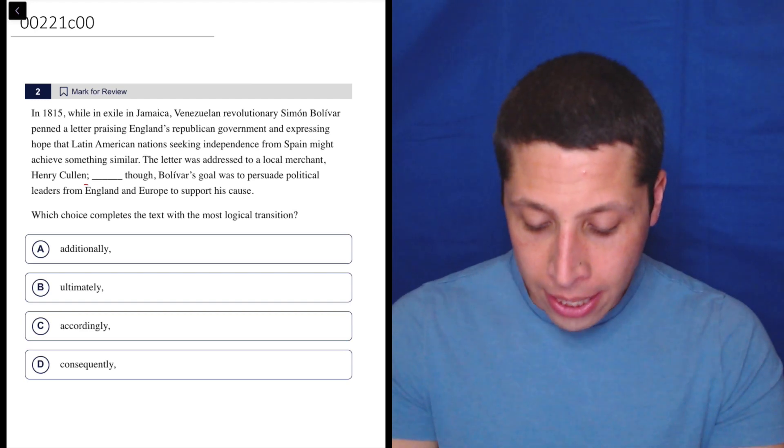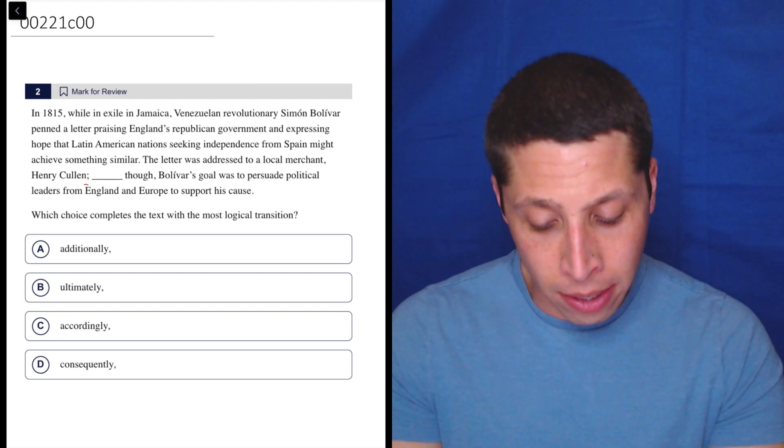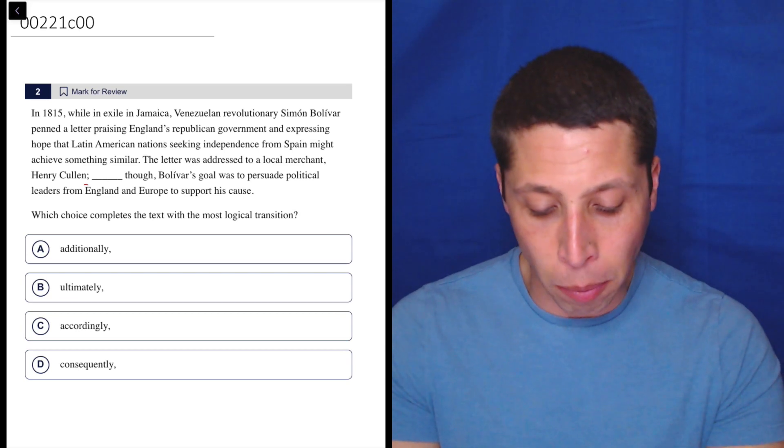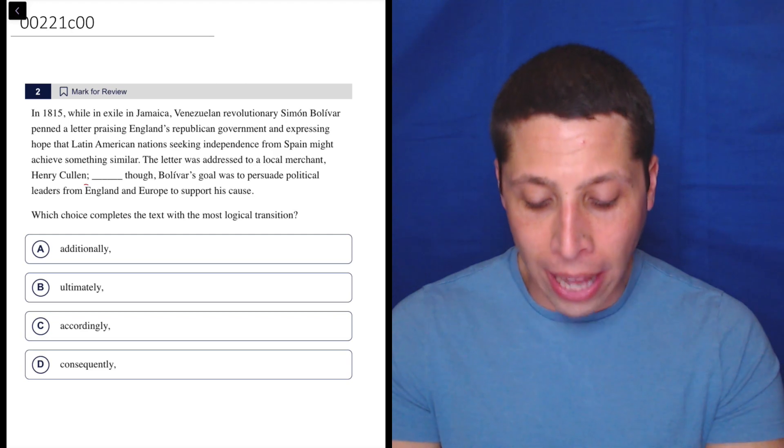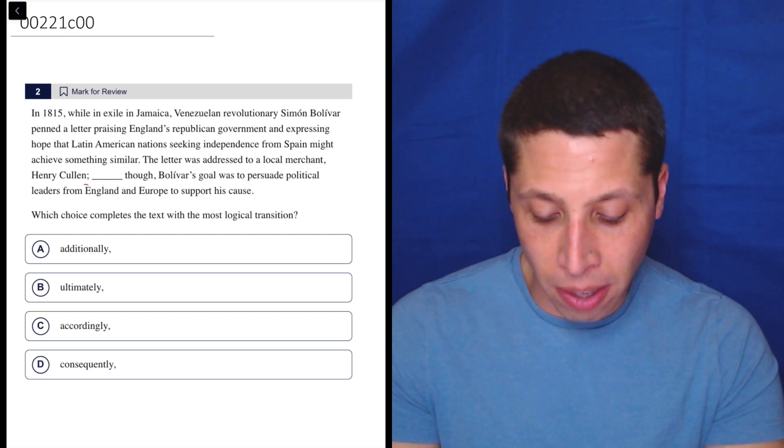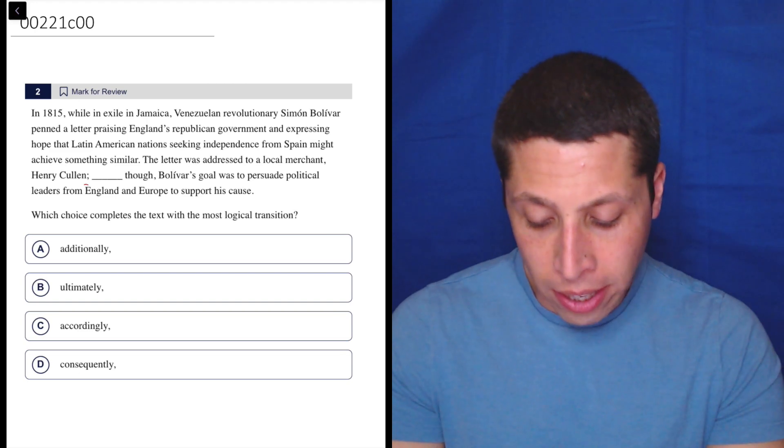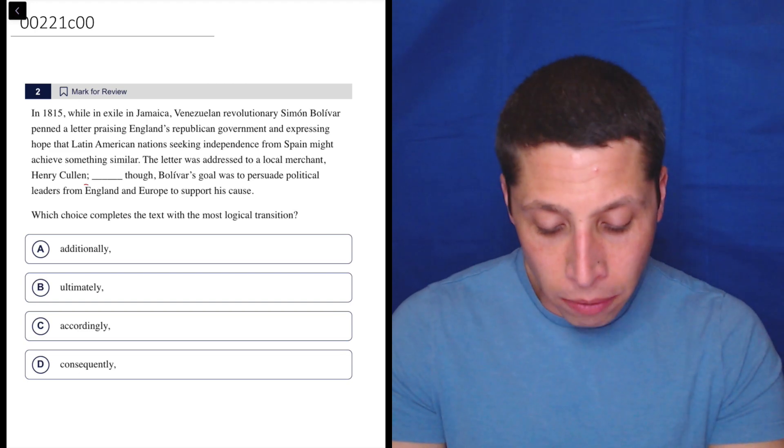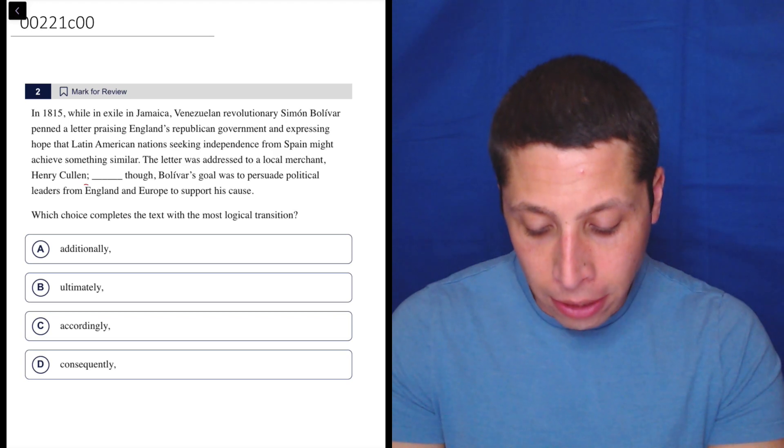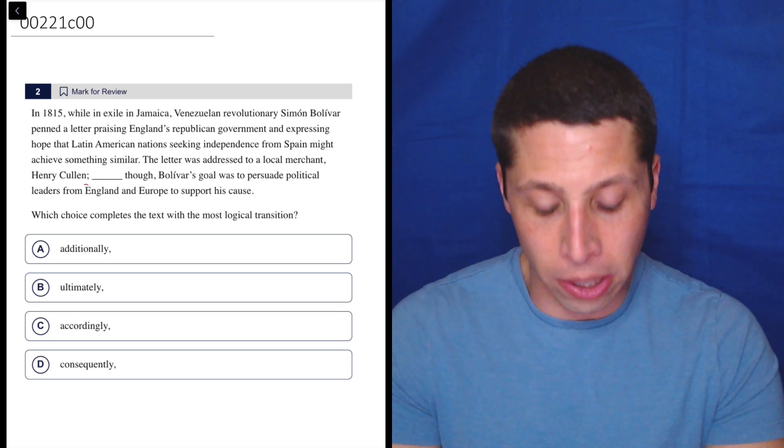So let's see. In 1815, while in exile in Jamaica, Venezuelan revolutionary Simone Bolivar penned a letter praising England's Republican government and expressing hope that Latin American nations seeking independence from Spain might achieve something similar. The letter was addressed to a local merchant, Henry Cullen, though Bolivar's goal was to persuade political leaders from England and Europe to support his cause.